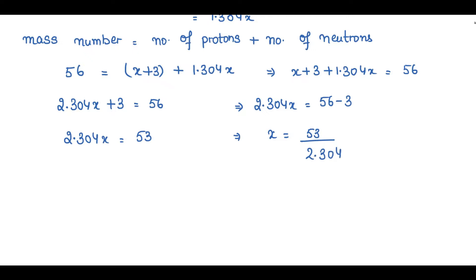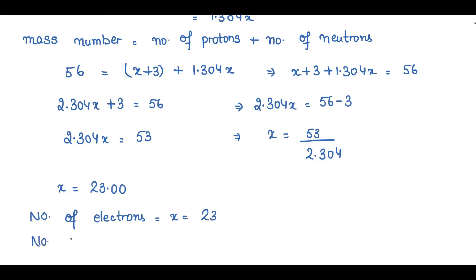When you divide 53 by 2.304, the approximate answer is 23. So x is approximately 23. Since number of protons are 3 more than number of electrons, and we assumed electrons equal x, number of protons equals x plus 3, which is 23 plus 3, giving 26.